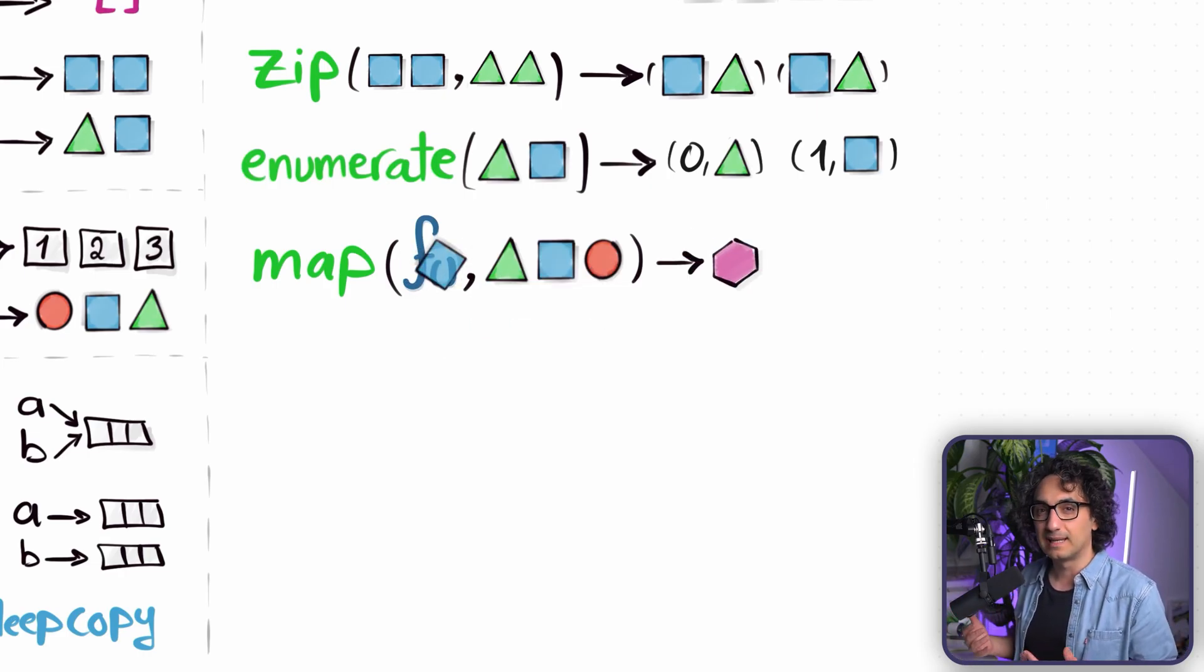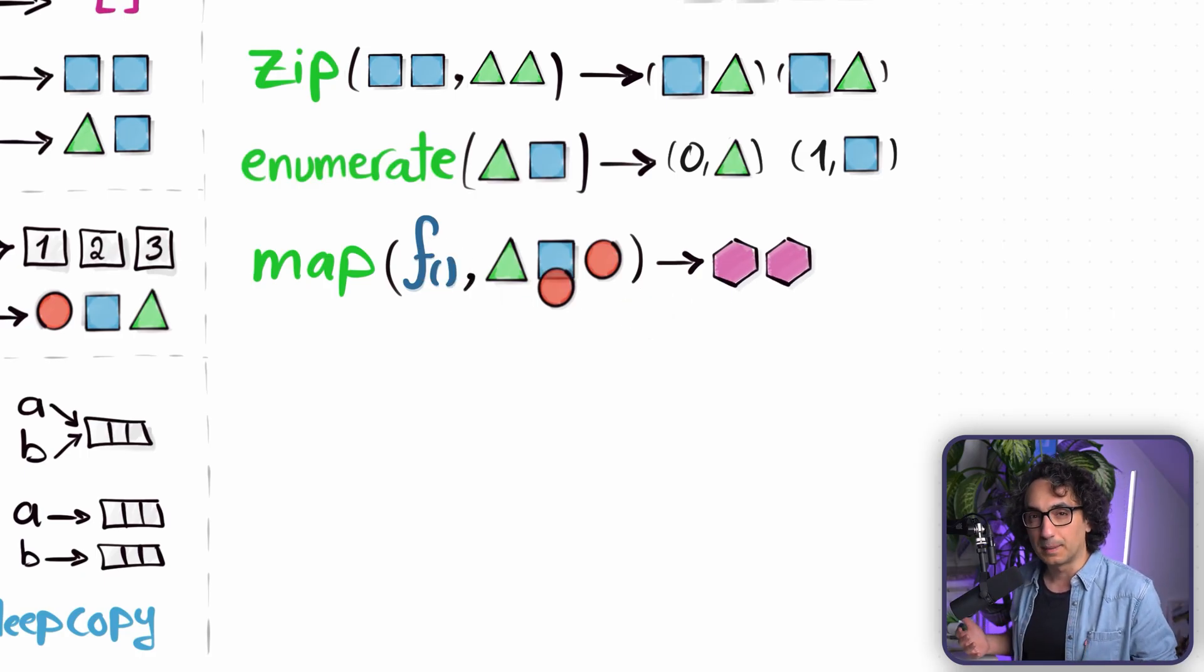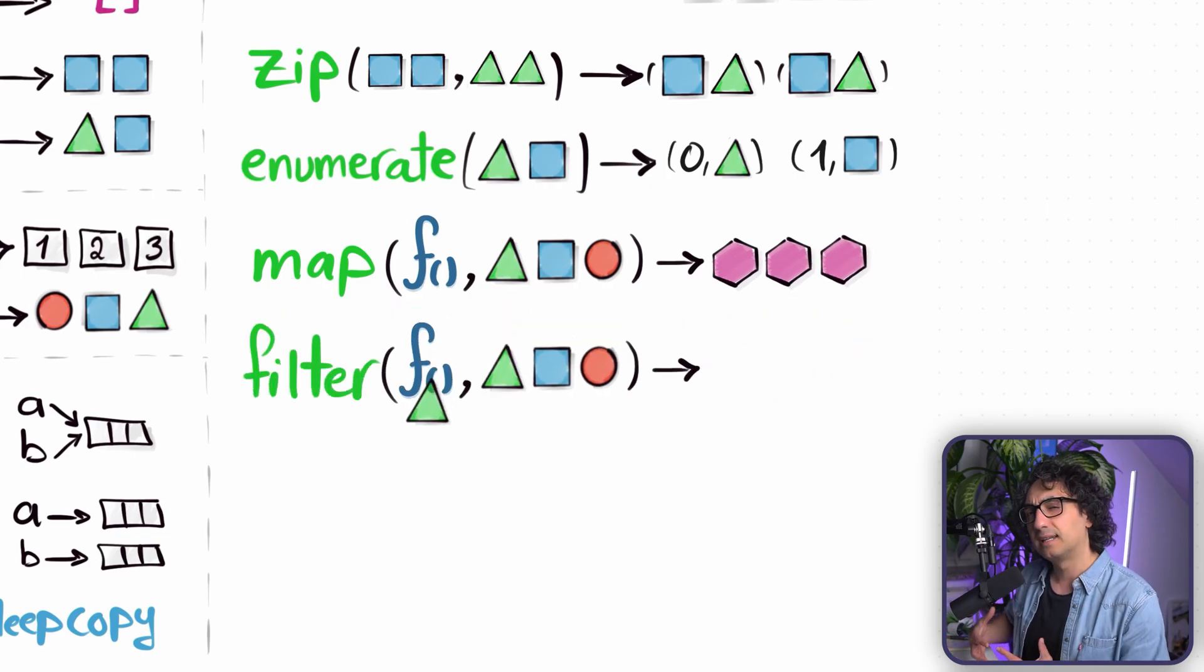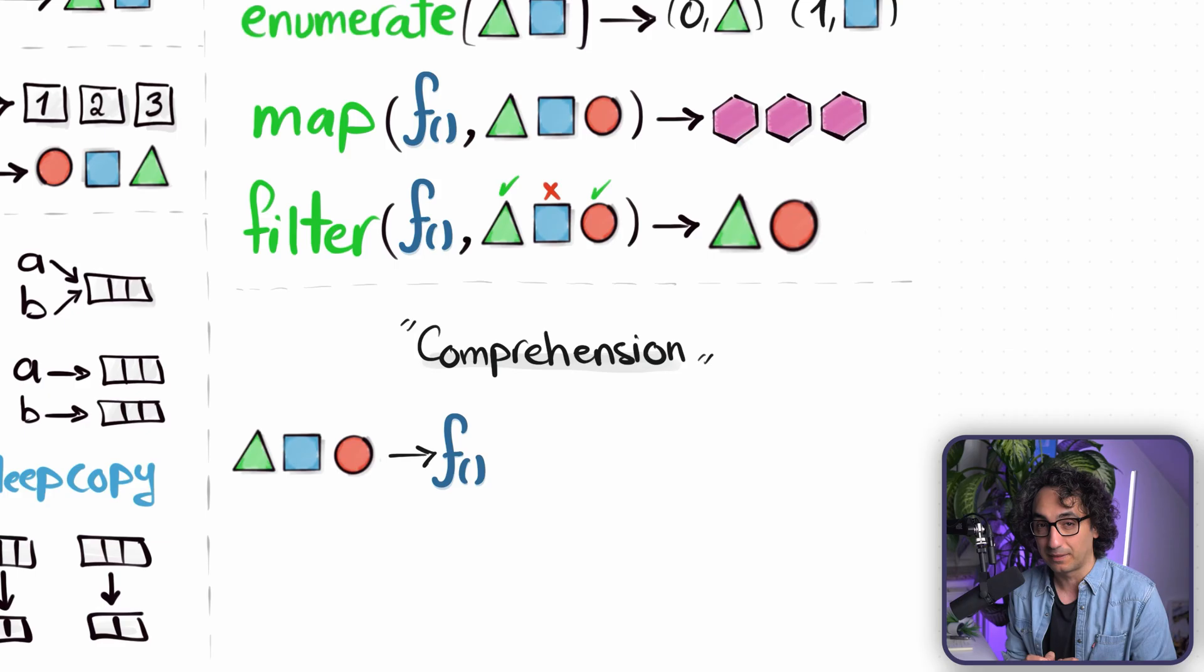And another function which is very similar is called filter. You're going to define your condition, your rules, and Python is going to keep only the items that fulfill your condition, and anything that is not meeting the requirements is going to be filtered out.